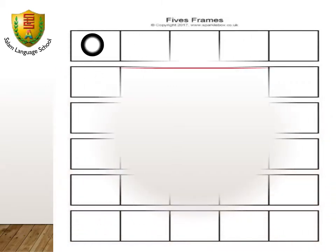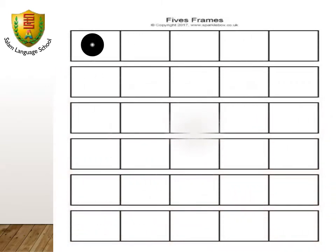Now we move to the 5-frame. I will put a new dot — it's number 5. Can you remember why it is called a 5-frame? Because each row has 5 dots.